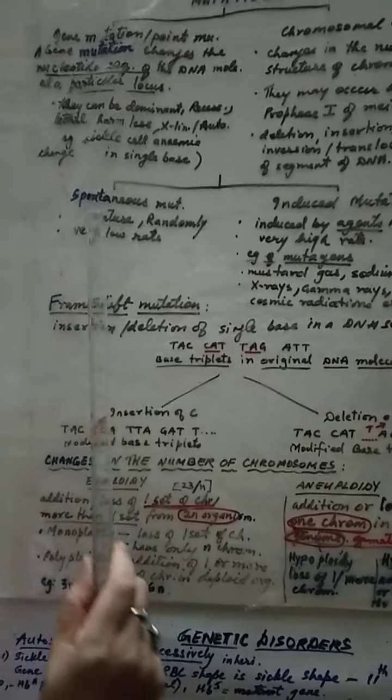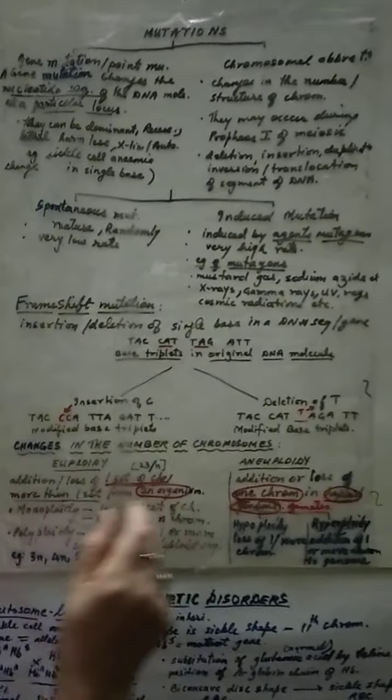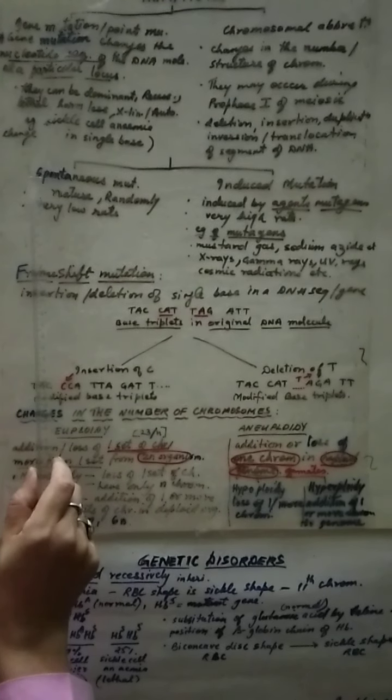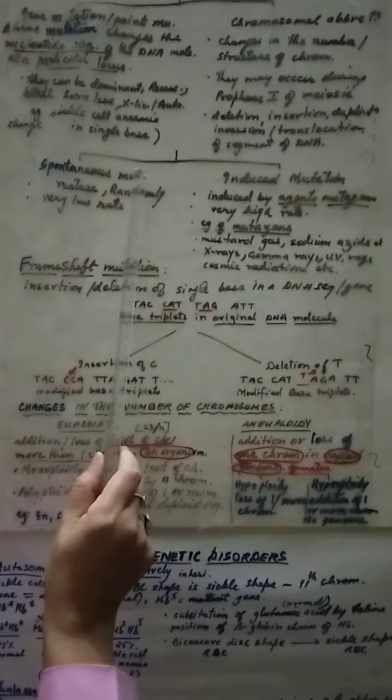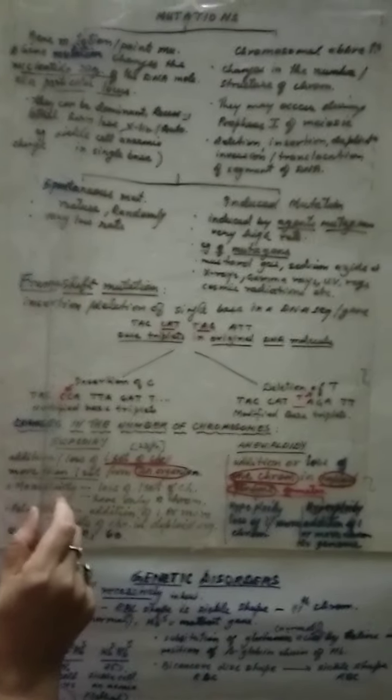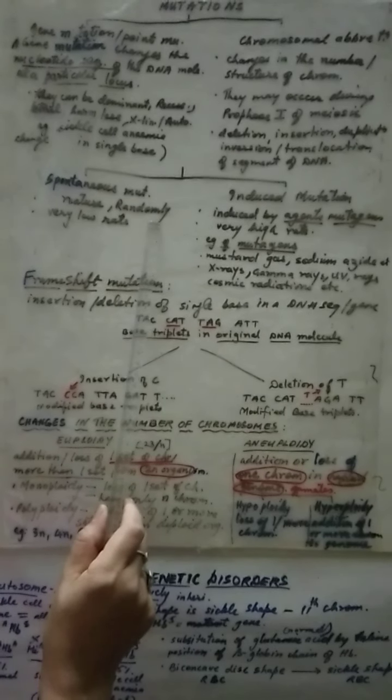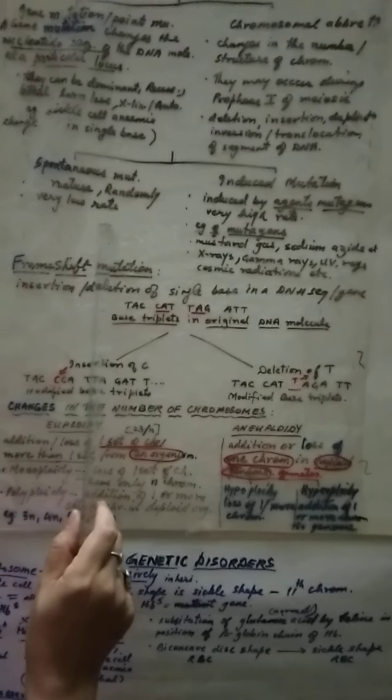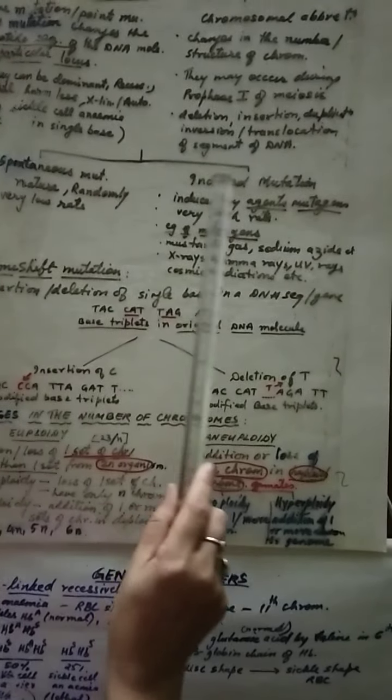Now these mutations are of two types: in nature and by man. First is called spontaneous mutation. Spontaneous mutations are present in nature, they are random and they are seen at a very low rate.